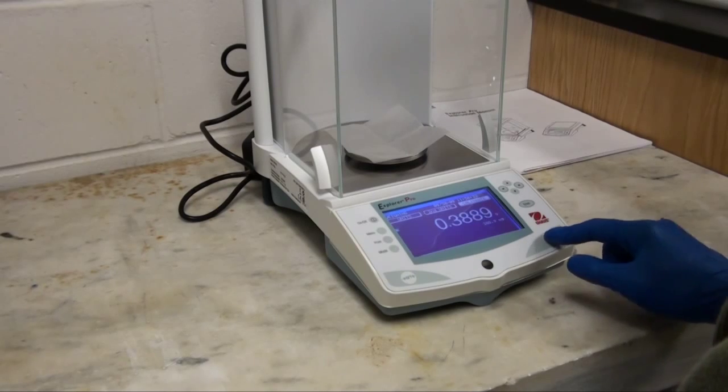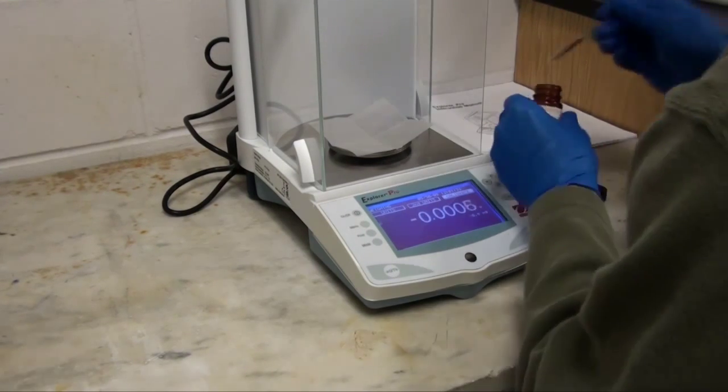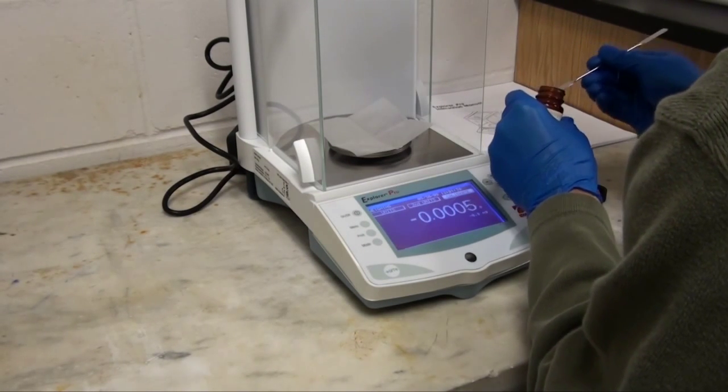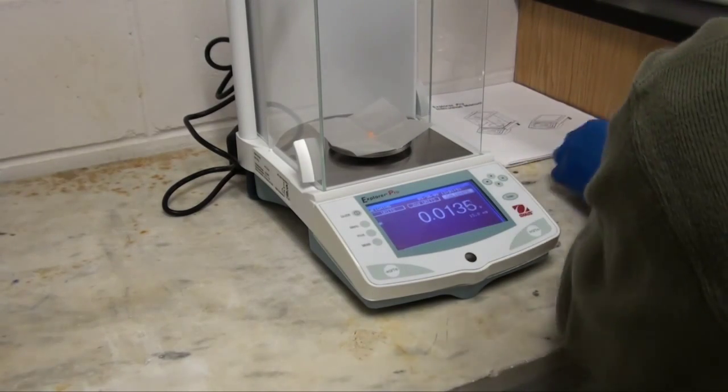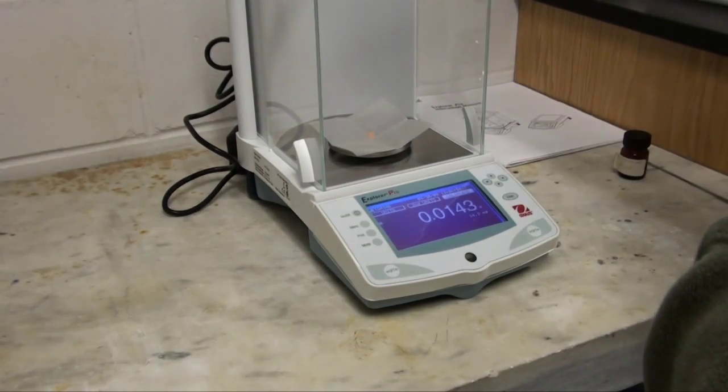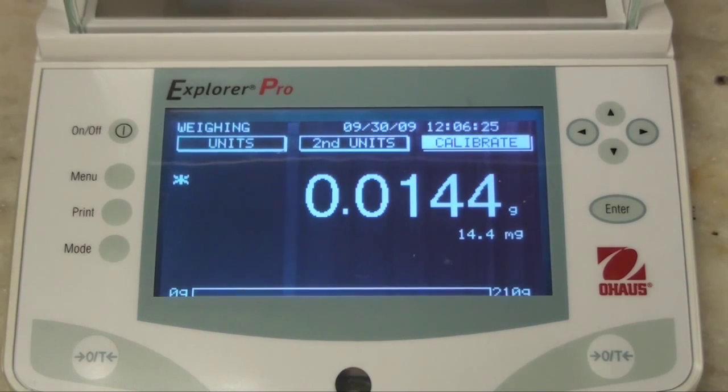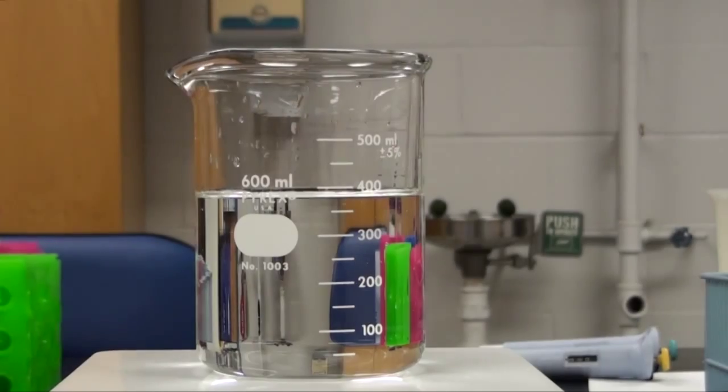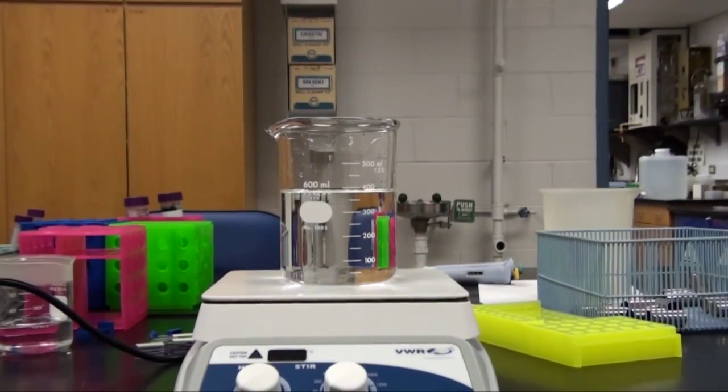What I'm showing you first is using an analytical balance to measure a small mass of a chemical by the name of bromphenol blue. This is commonly used in molecular biology labs as a chemical indicator or a dye to monitor electrophoresis in a DNA loading buffer.